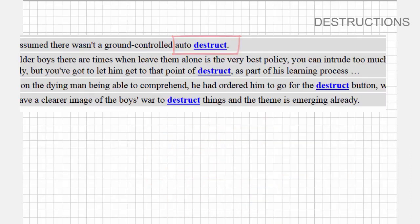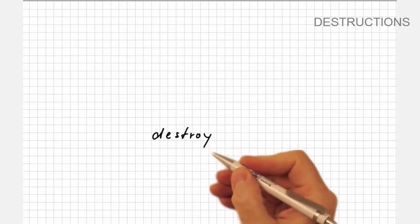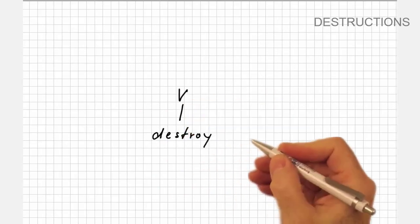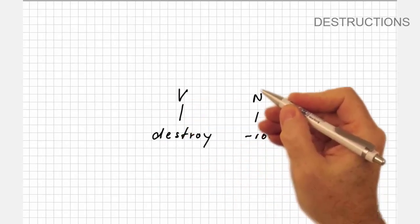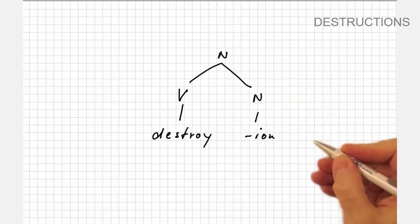So the base form must be destroy, which is of course a verb. Now the nominal affix ion is attached and this turns the verb into a noun.